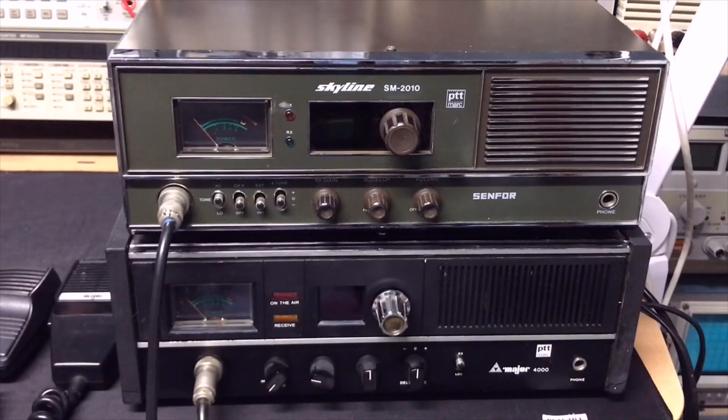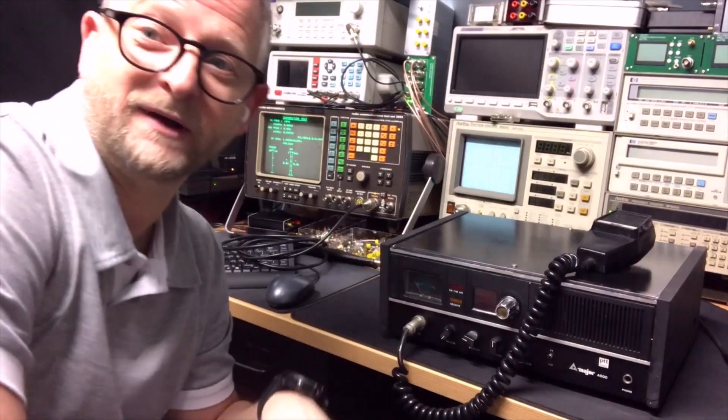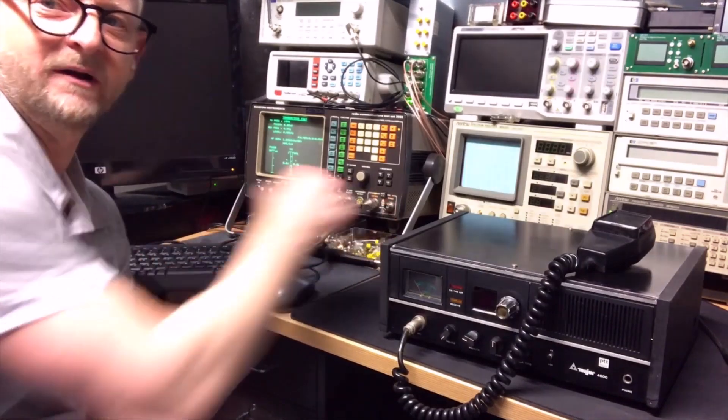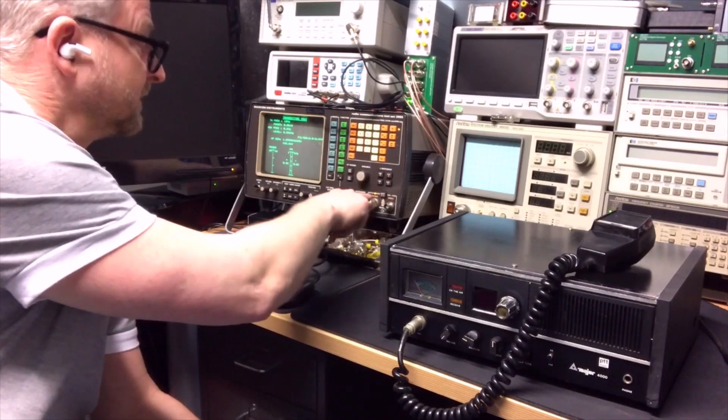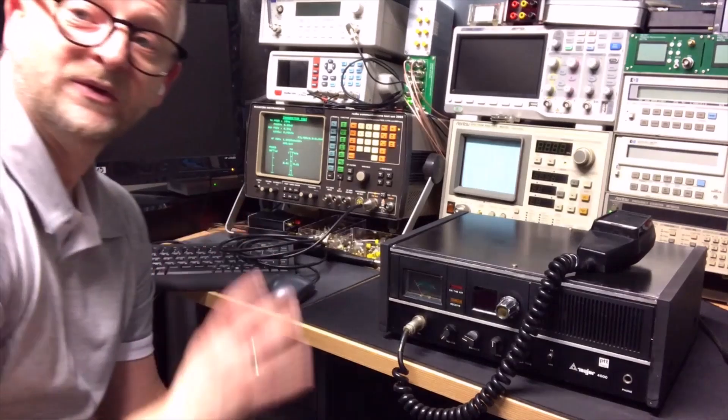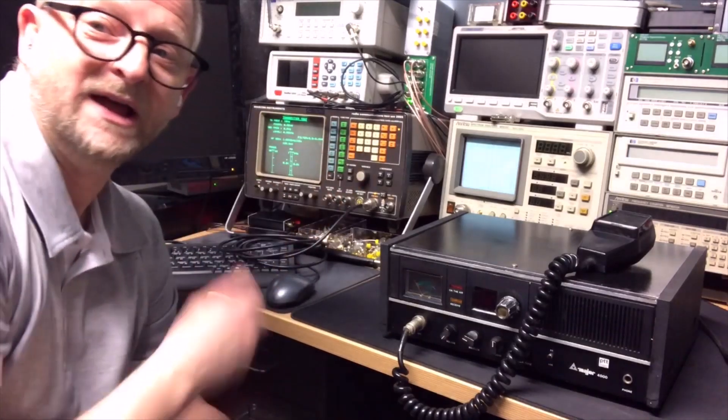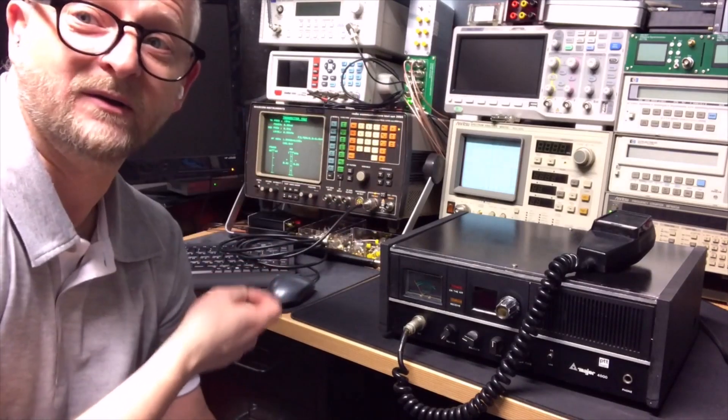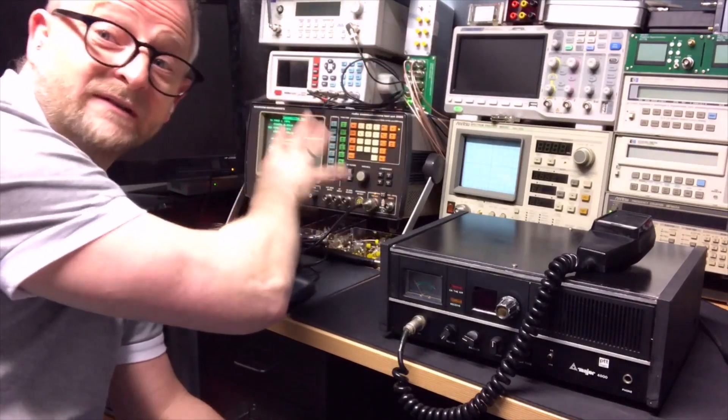So I would just hook them up to the Marconi. I will show you quickly how to connect it to the Marconi but it's nothing special. I have just two inputs here in the Marconi. There is one for the low power up to one watt and I'm connecting it here to the other connection that can go up to 75 watts. This is one of the first versions of the 2955 so it doesn't have a letter, not A or B, so it's just the 2955 but it goes up to one gigahertz which is a lot and I connected it to external reference to my GPSDO so it is spot on.